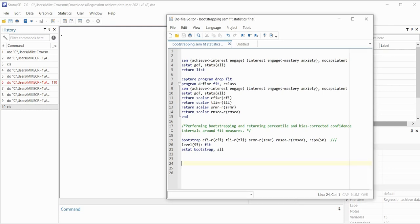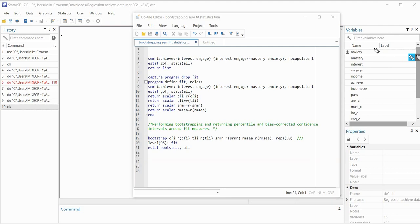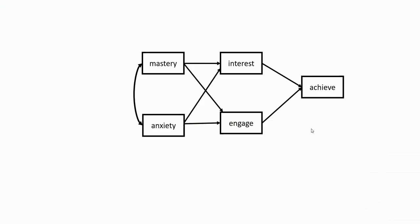The variables in our dataset that we're going to be working from are the anxiety, mastery goals, interest, engagement, and achievement variables. The basic conceptual model is a path analysis where mastery goals and anxiety serve as exogenous variables, and interest, engagement, and achievement serve as endogenous variables. Interest and engagement are serving as mediators of the effects of mastery goals and anxiety on achievement.